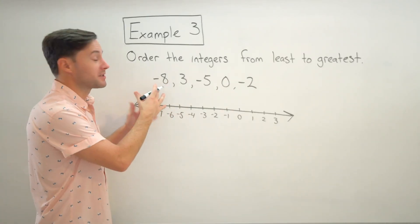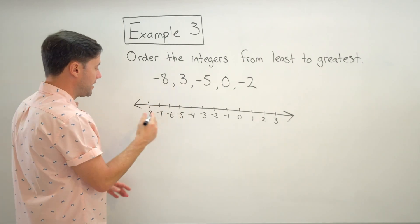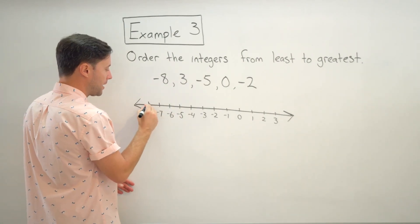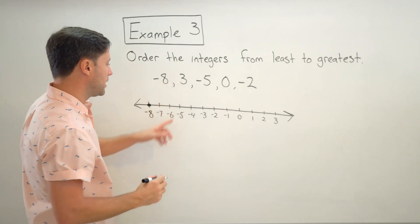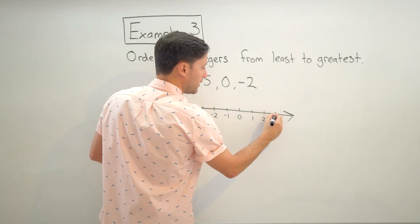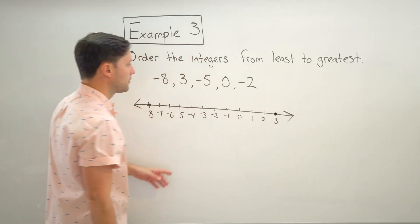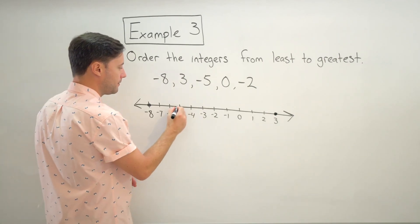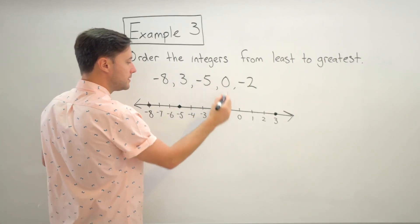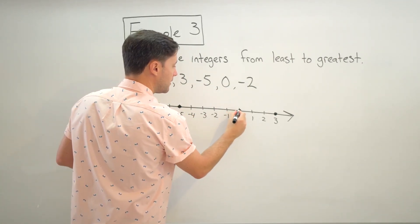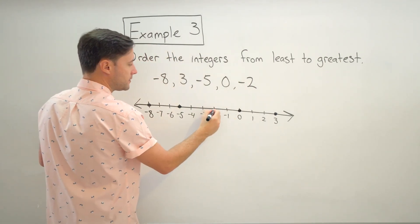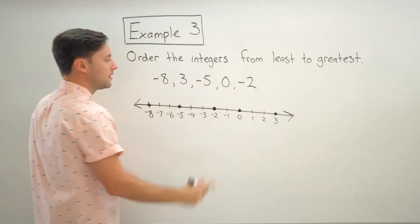So now I'm just going to graph. So I've got negative eight is right here. Put my point on the number line. I've got three is all the way up here on the number line. Then negative five right there. Zero right here. And finally, negative two right there.